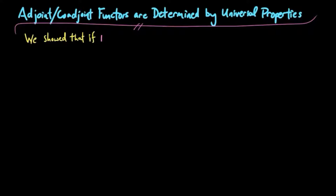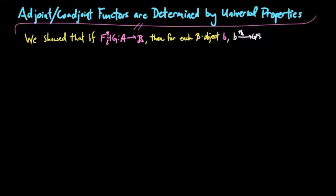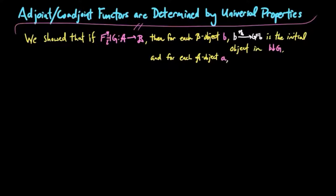We showed that if f is left adjoint to g, then for each object b, the unit component η_b is the initial object in b over g. And for each object a, the counit component on a is the terminal object in f over a.